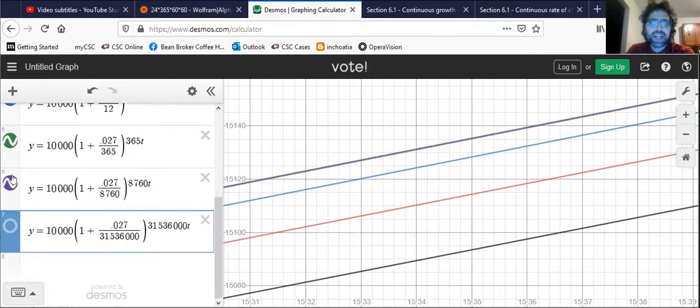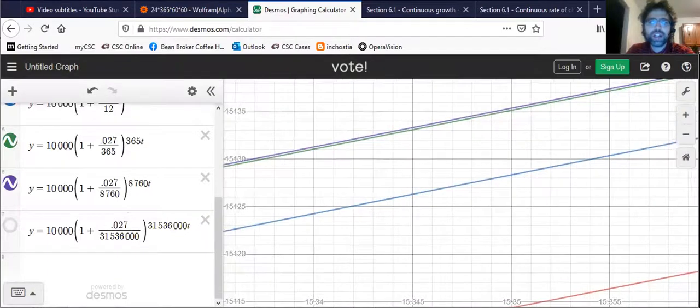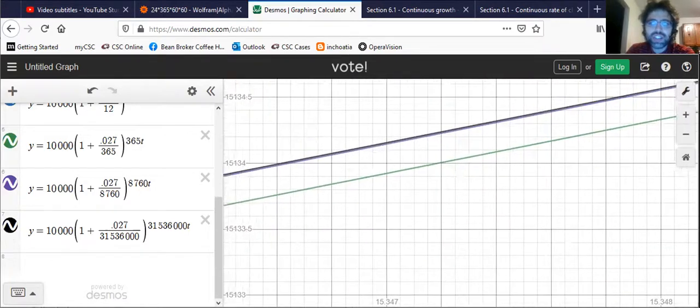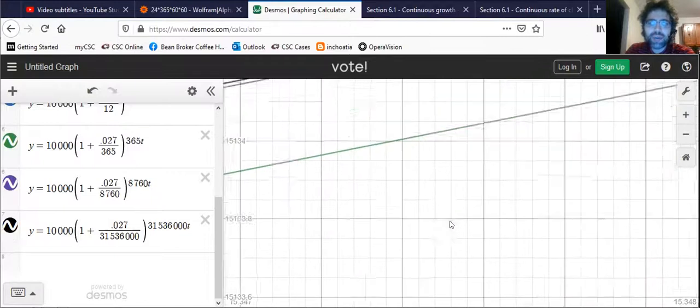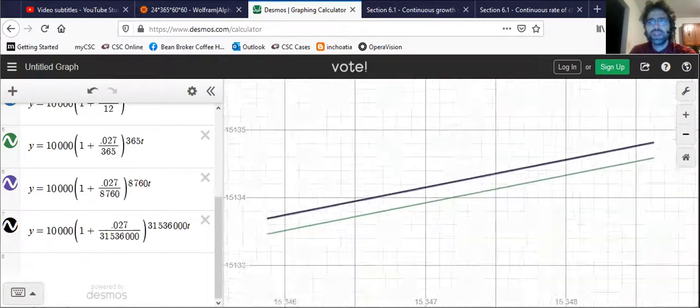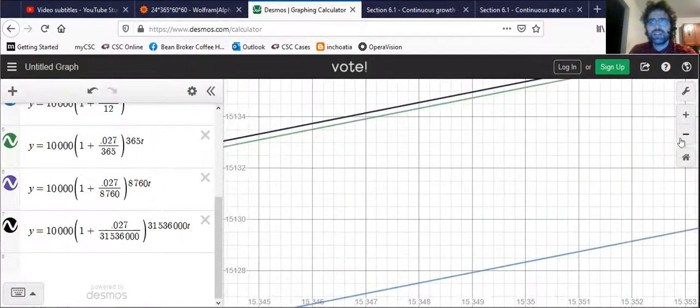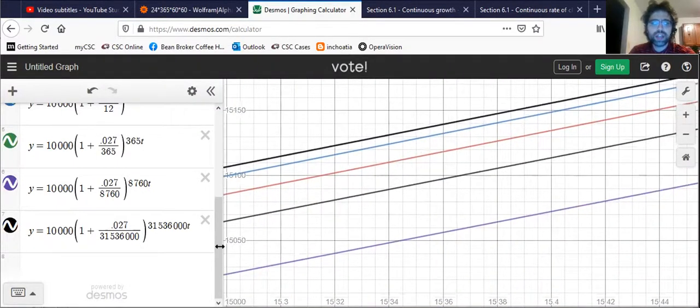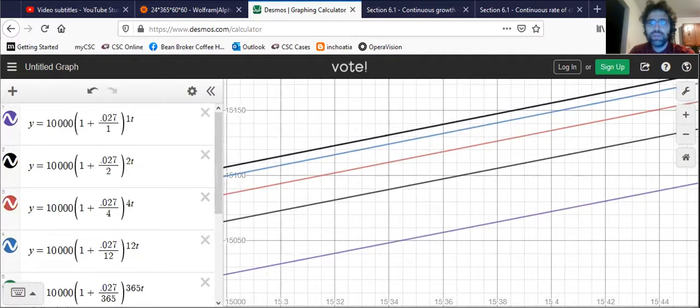Here's hourly. Here's every second. If we zoom in far enough, we will be able to distinguish eventually that the hour graph and the second graph are different. But going all the way back out to our original viewing window, they just blend together.